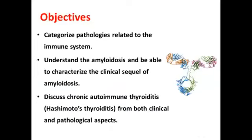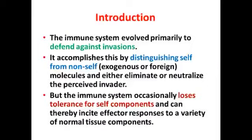We will understand amyloidosis and be able to characterize the clinical sequel of amyloidosis, and discuss chronic autoimmune thyroiditis اللي هو ما يعرف بالهاشموتو thyroiditis، من ثم ناخذ clinical and pathological aspect. نعرف الـ immune system هو شنو الوظيفة والفنكشن مالتها، primarily to defend against the invasions of microbes, virals, and other insults.